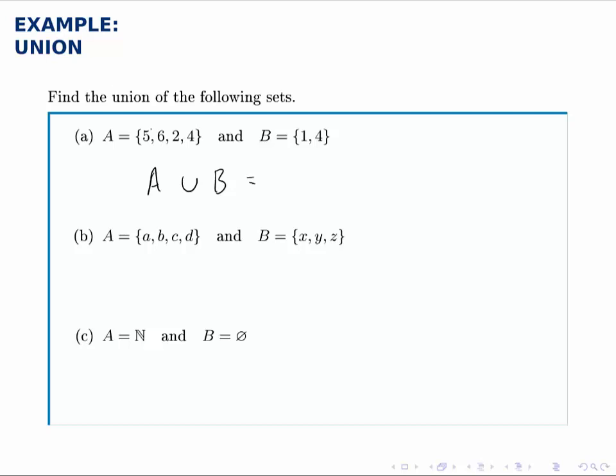As always, any element that appears in either set. So we take all the elements of A, that's the easy way to start, and then add in any elements from B that we don't already have. So we'll add in the one. We don't need to add the four because we already have it. So the union is those five elements.